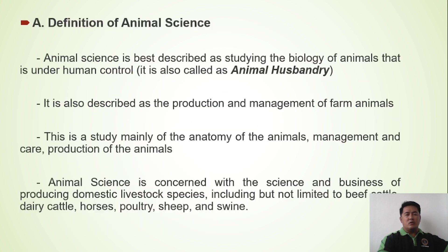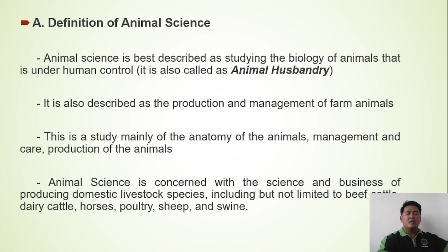First, we have to define what is animal science. I think you already heard about animal science and you already have the idea of what it is. So we will expound and explain more about what animal science is. Animal science is best described as studying the biology of animals that are under human control.